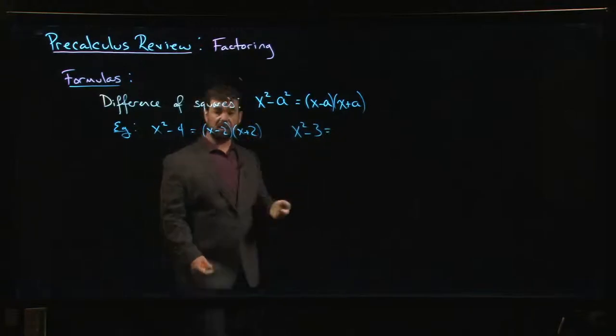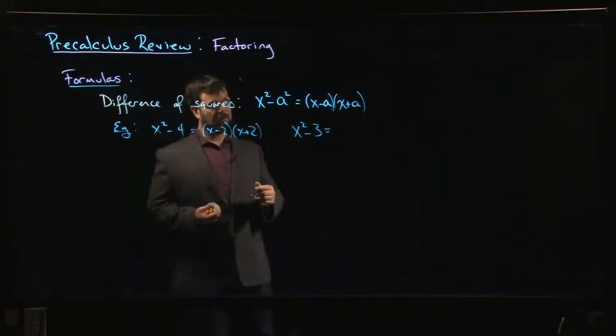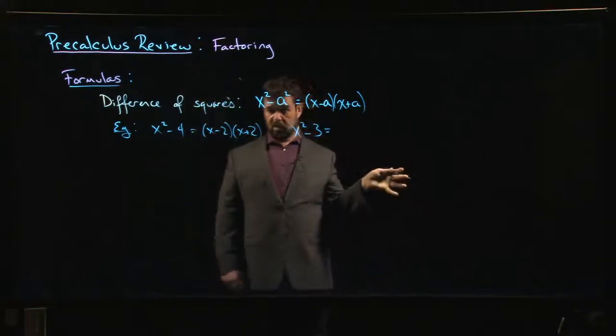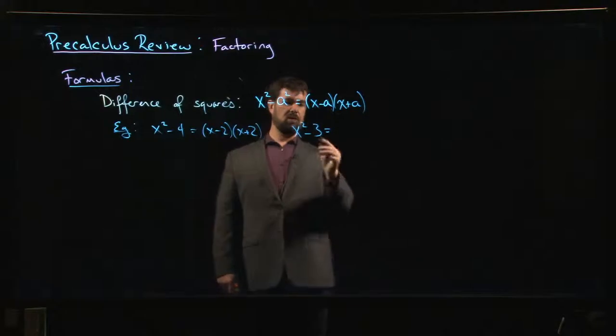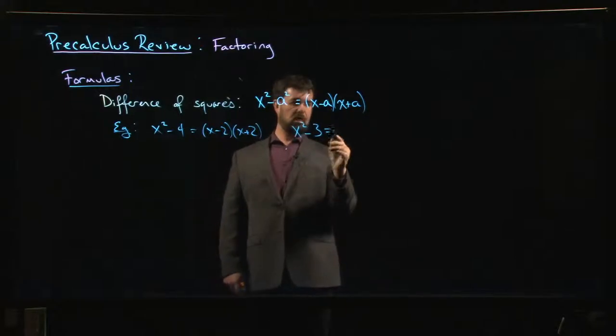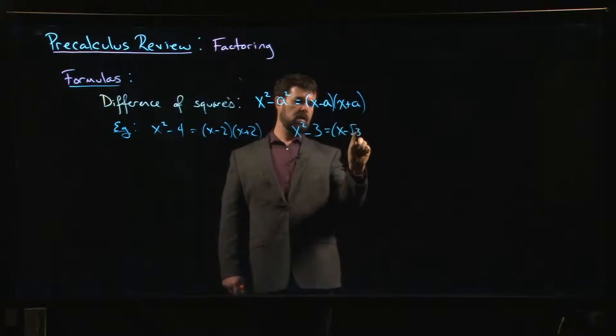Well hang on a sec, 3 is not a perfect square, but it's the square of something. We're working over the real numbers, we can have irrational values. 3 is the square of root 3, so we can factor that as x minus root 3 times x plus root 3.